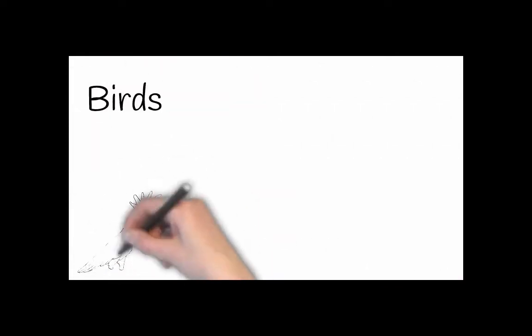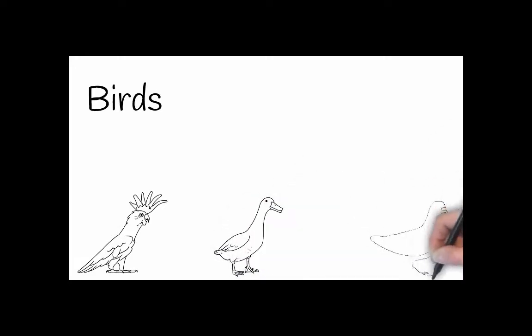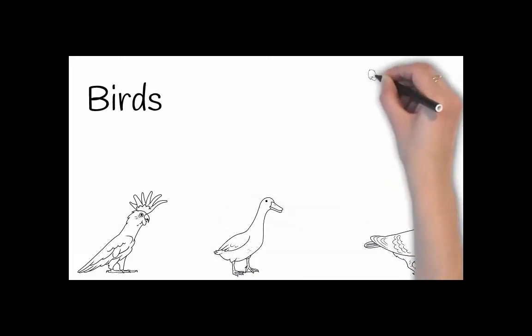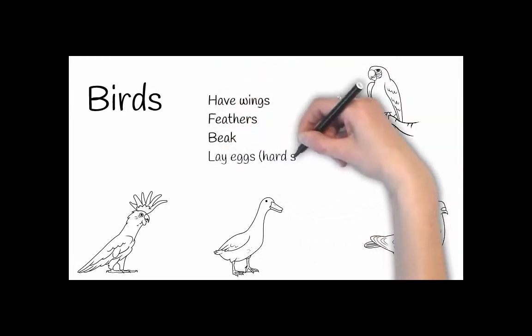Birds are classified by having wings, a beak, feathers, they lay hard-shelled eggs, and they are also endothermic, meaning warm-blooded.